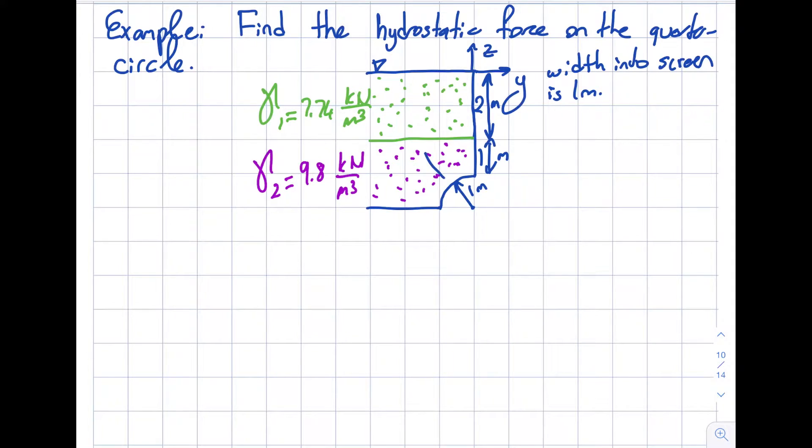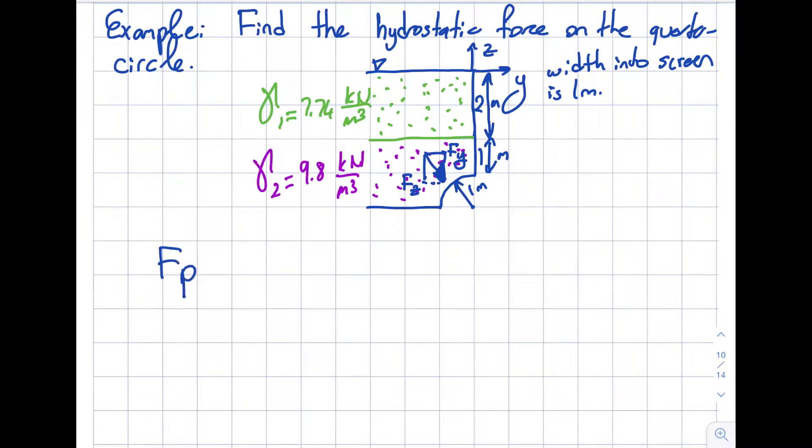So I do know that it will be like this, FR or FP force that will be generated, and it will have components. It will have a component in the y-direction and a component in the z-direction as well. So now if I go out and write this, my FP will be FY in the j-direction minus FZ in the k-direction. So the existence of two immiscible fluids doesn't change this fact.